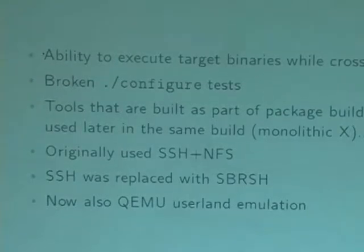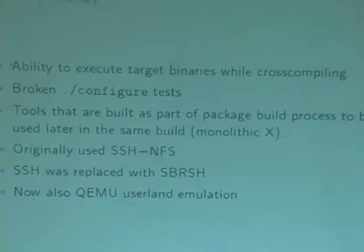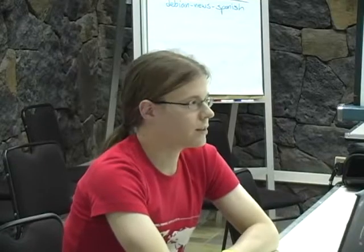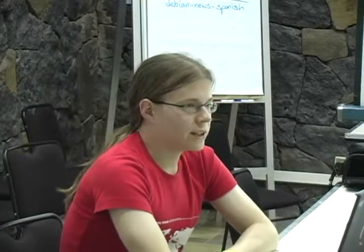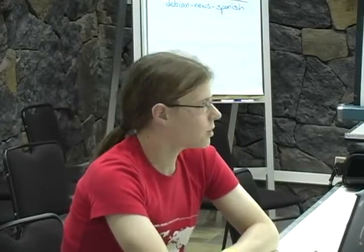CPU transparency: because you execute binaries of the target architecture during cross-compiling. So when a configure script runs a test, in theory, if you write the configure and the autoconf correctly, it will just skip the test if you're cross-compiling. But in practice, this was not really true. Developers either didn't know how to properly use automake, or they just didn't care about cross-compiling. And then there are of course things like monolithic X, which first compiles imake, and they use imake to compile the rest of the stuff, which makes it really difficult to cross-compile.